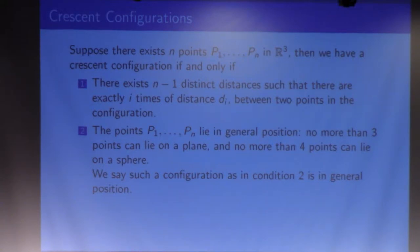But a slightly different condition is that to be in general position, a crescent configuration in 3D should have no more than three points in a plane and no more than four points on a sphere. This is actually an analogy of the 2D case, and we can expand to higher dimensions if we want.